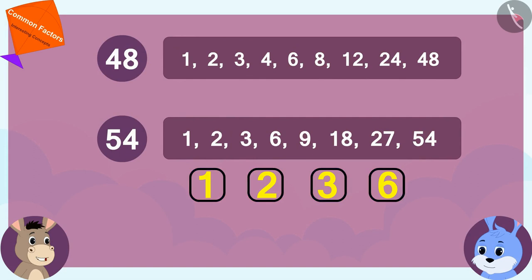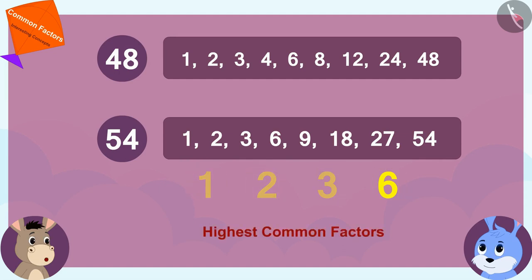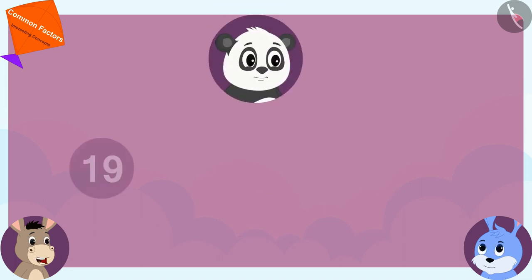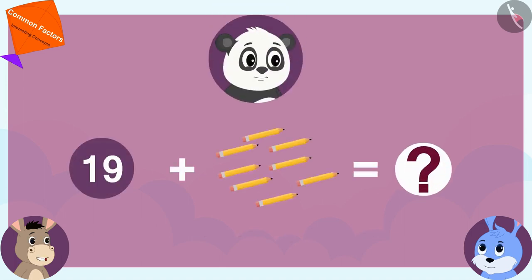Look guys, these numbers are the common factors of 48 and 54, and six is the highest common factor of these numbers. So we have to increase the number of Golu's 19 pencils in such a way that even that increased number has six as a factor.